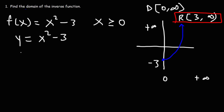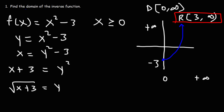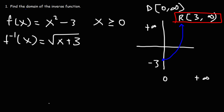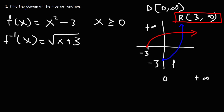Let's replace f of x with y, then switch x and y, and then solve for y. I'm going to add 3 to both sides, and to get y by itself, I'm going to take the square root of both sides. Then let's replace y with the inverse function symbol. So the inverse function is the square root of x plus 3. If we were to graph that, the square root of x has been shifted three units to the left, so it's going to start at negative 3 and go towards the right. The blue line is f, the red line is the inverse function. When you graph f and the inverse of f, they reflect about the line y equals x.